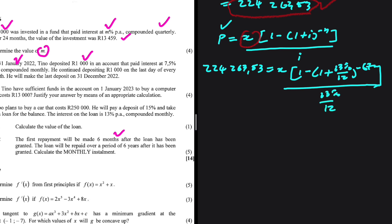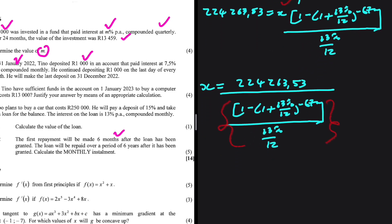We divide everything by the interest which is 13% divided by 12. Solving for x: x = 224,263.53 divided by the coefficient of x, which equals R4,724.96.